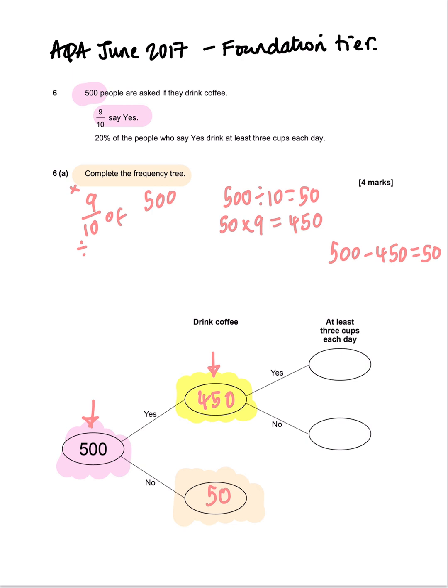Now we've got to fill out the last part of the frequency tree. This branch is they drink coffee and they drink at least 3 cups a day, and this branch is they drink coffee but they don't drink 3 cups a day. Going back to the question, it says 20% of the people who say yes drink at least 3 cups a day. So that 20% of people is these guys here.